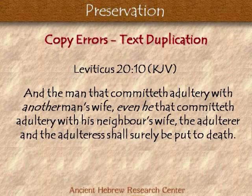Leviticus 20, verse 10, this is the King James Version: 'And the man that committeth adultery with another man's wife, even he that committeth adultery with his neighbor's wife, the adulterer and the adulteress shall surely be put to death.' As far as the grammar and the way that sentence is written, there's really no problems there. It makes sense.